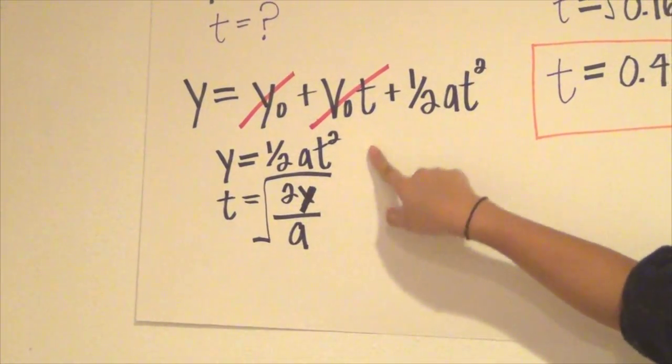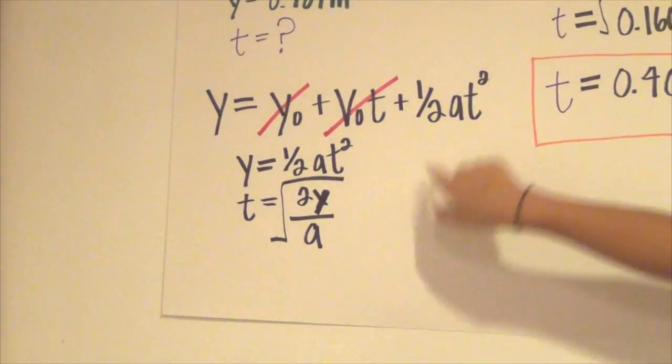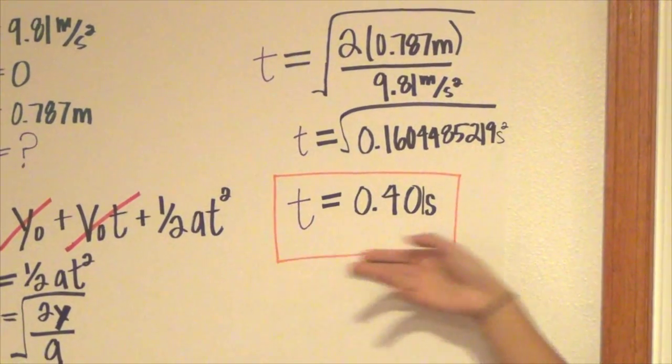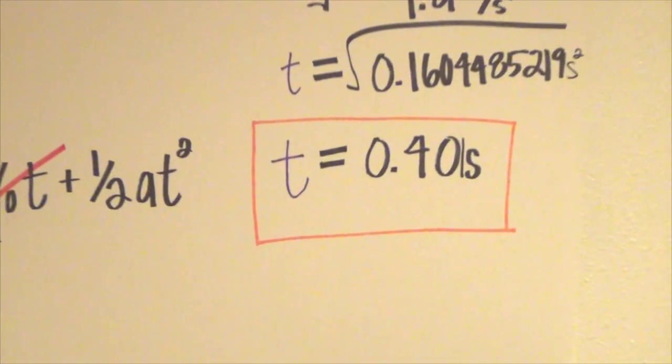We found out that this equals 0 so we cross that out. We got y equals one half a t squared, which becomes our formula: t equals the square root of 2y over a. We plug in our components and we got t equals 0.401 seconds.